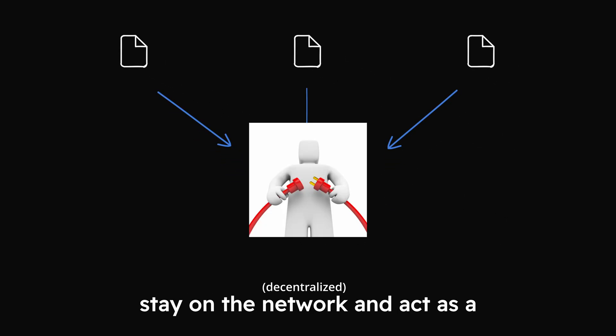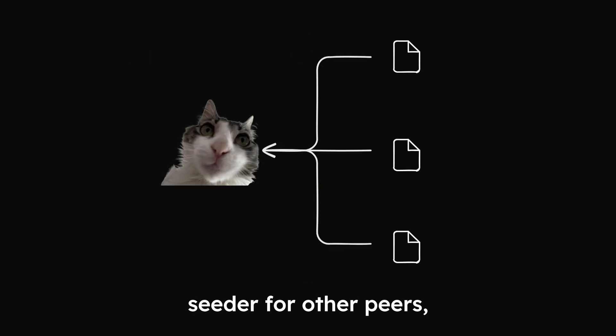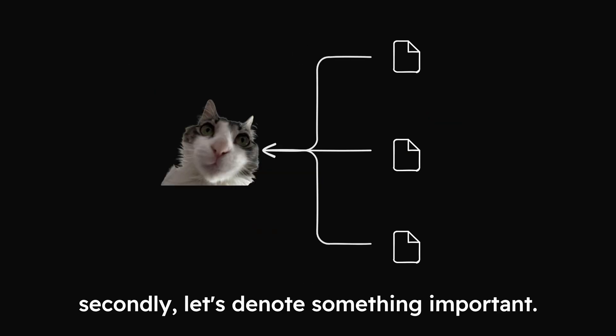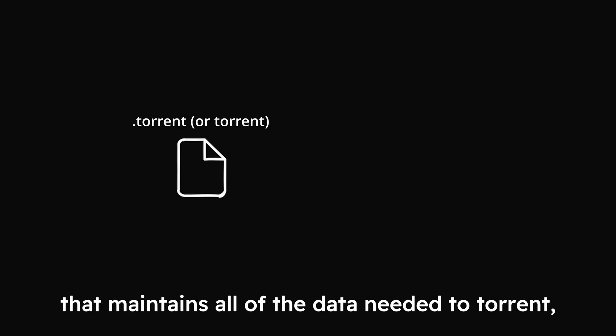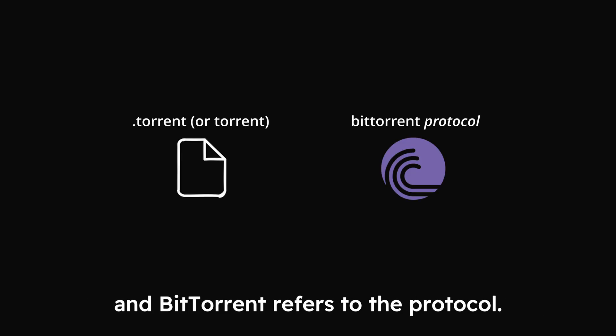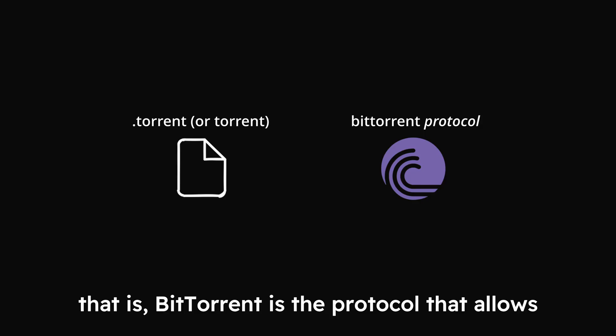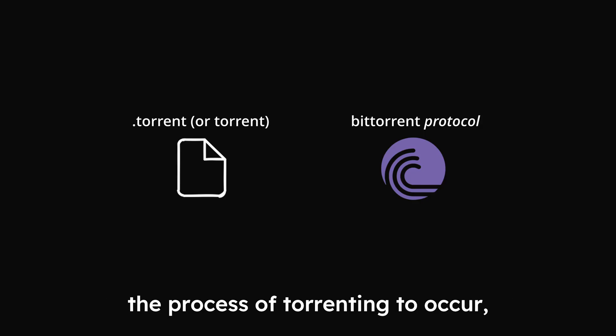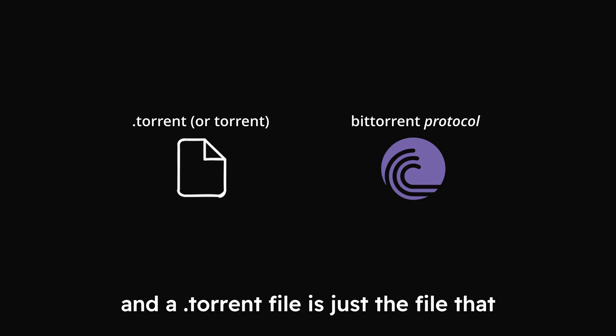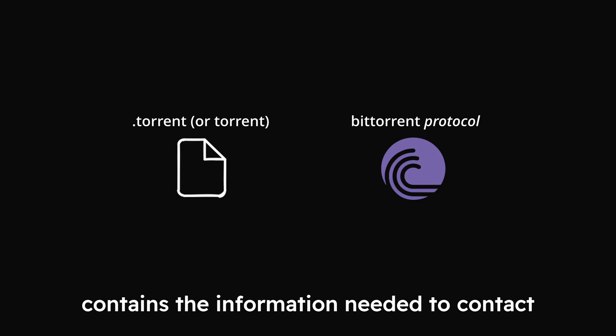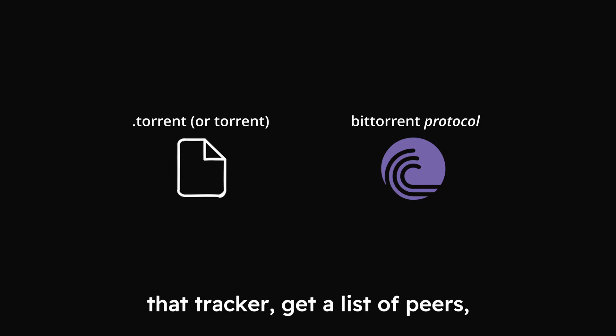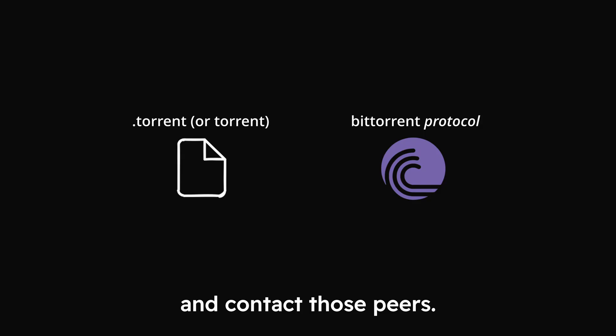Actually, we can stay on the network and act as a seeder for other peers. Now, .torrent refers to the torrent file type that maintains all of the data needed to torrent, and BitTorrent refers to the protocol. That is, BitTorrent is the protocol that allows the process of torrenting to occur, and a .torrent file is just the file that contains the information needed to contact the tracker, get a list of peers, and contact those peers.